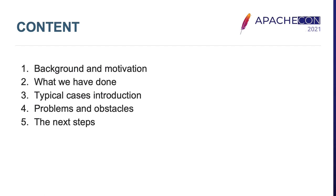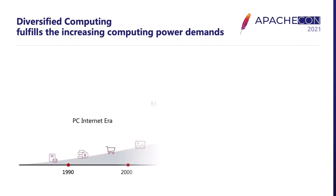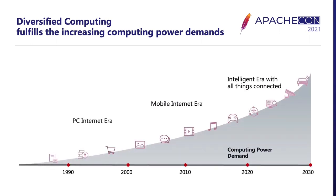Over the past few decades, we have experienced technology booming and innovation starting so fast, beyond anyone's imagination. Thirty years ago, personal computers were very expensive and only governments and organizations could afford them. Before we could notice, smartphones brought us into the mobile internet era, and computing moved from the personal desktop to mobile. Then we entered the intelligent era with all things connected, where everyone is talking about cloud, AI, IoT, and big data.